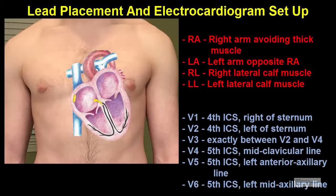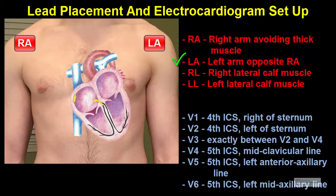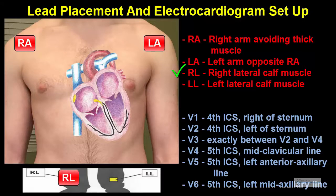The electrodes are placed as follows. RA, or right arm, is placed on the right arm, avoiding the thick muscle. LA, or left arm, is placed on the left arm in a similar place as the RA electrode. RL, or right leg, is placed on the right lateral calf muscle. LL, or left leg, is placed on the left lateral calf muscle in a similar place as the RL electrode.